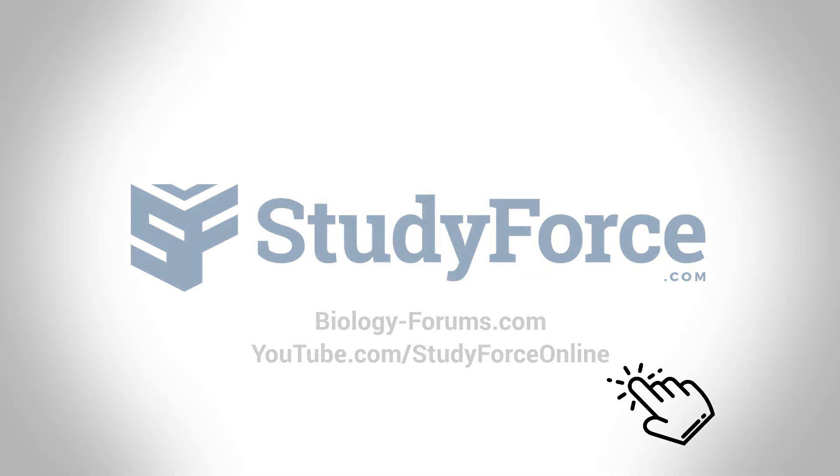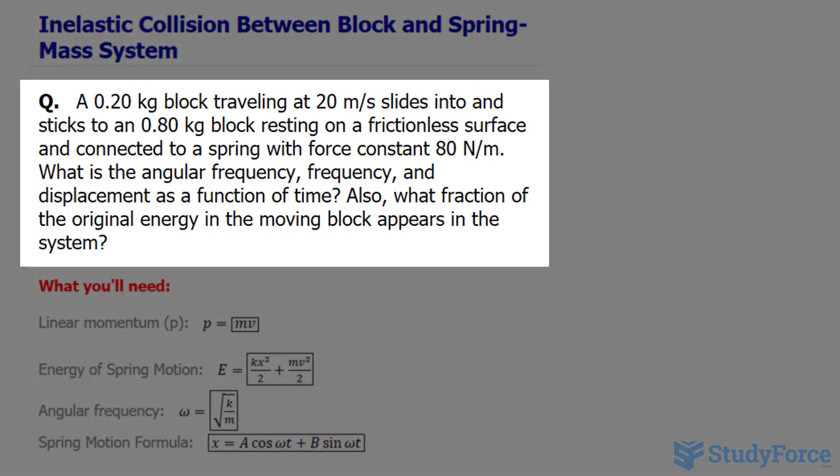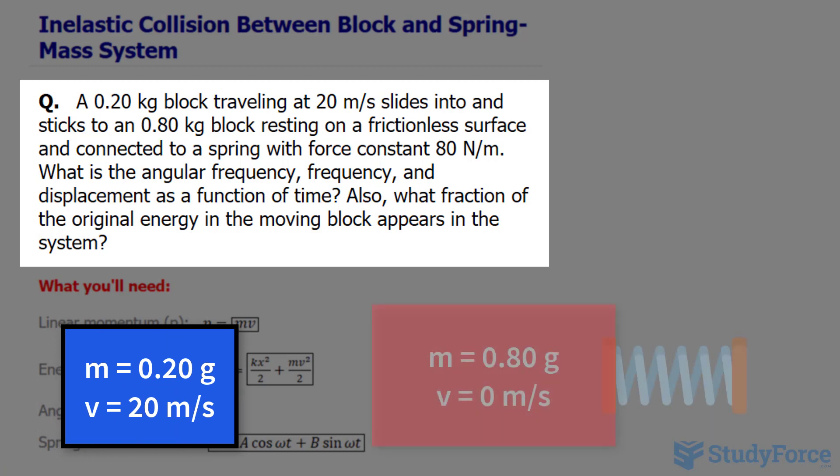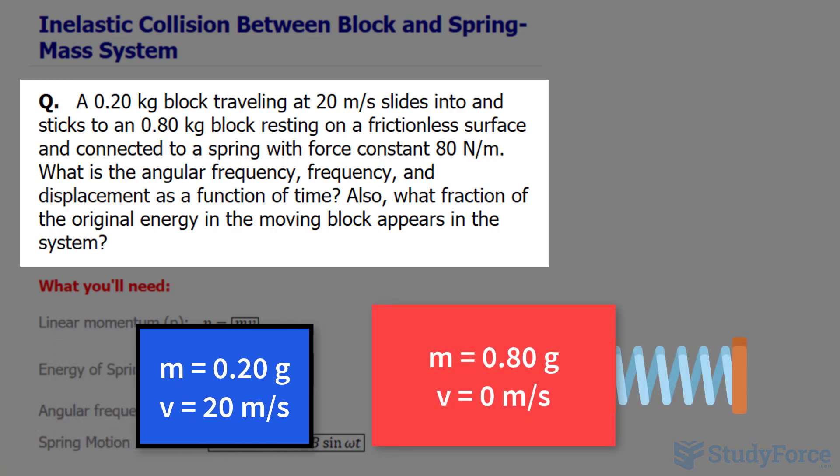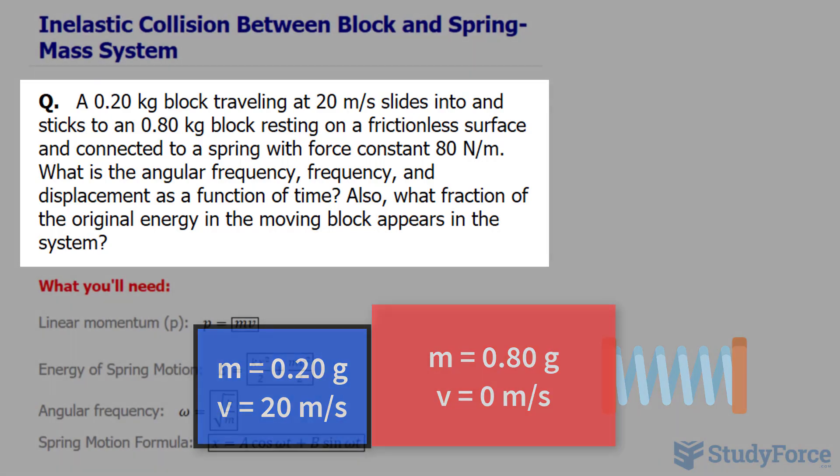In this lesson, we will look at what happens in an inelastic collision between a block and spring mass system, and we'll be doing that by answering this question, which reads: a 0.20 kilogram block traveling at 20 meters per second slides into and sticks to a 0.80 kilogram block resting at a frictionless surface and connected to a spring with a force constant 80 newtons per meter. What is the angular frequency, frequency, and displacement as a function of time? Also, what fraction of the original energy in the moving block appears in the system?